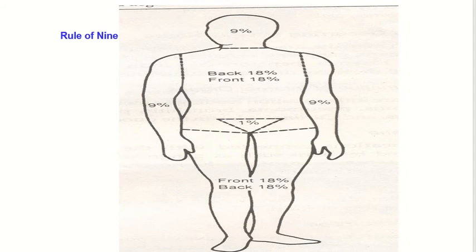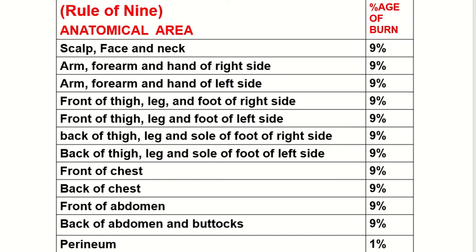Now we will see the rule of 9 in burn cases, which relates the anatomical area to the percentage of burn. If the burn area is the scalp, face, and neck, it accounts for 9%.